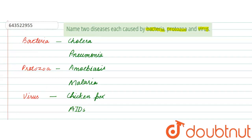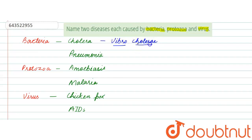Now let's talk about the causative agents as well. Cholera is caused by Vibrio cholerae, and it is fatal if not treated properly. Vibrio cholerae is the causative agent of cholera. Now let's move toward the causative agent of pneumonia — Streptococcus pneumoniae is the causative agent of pneumonia.